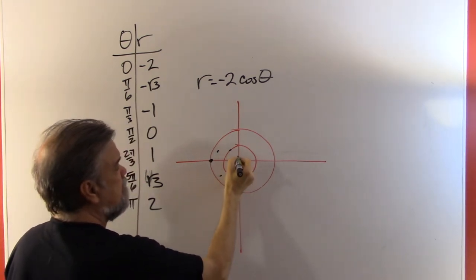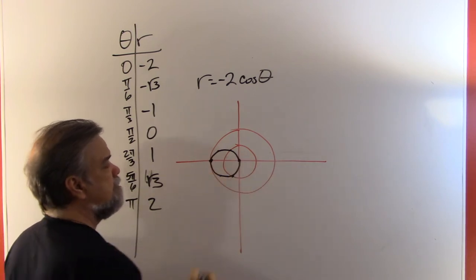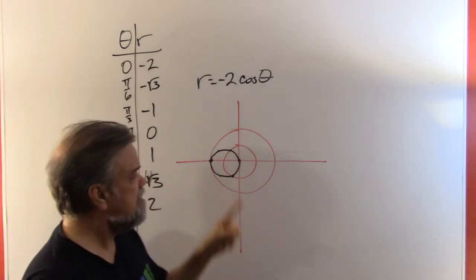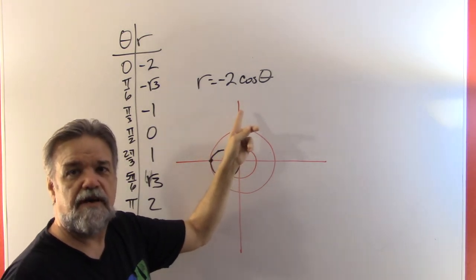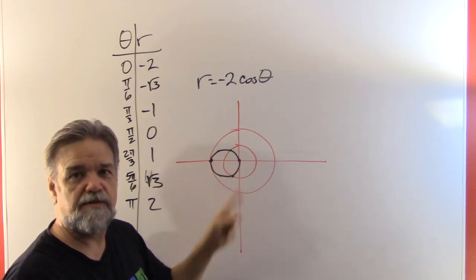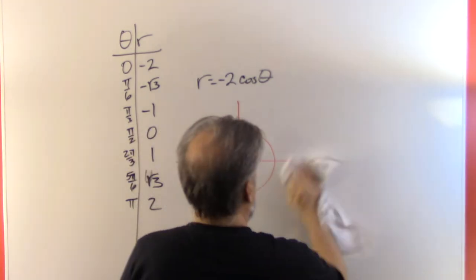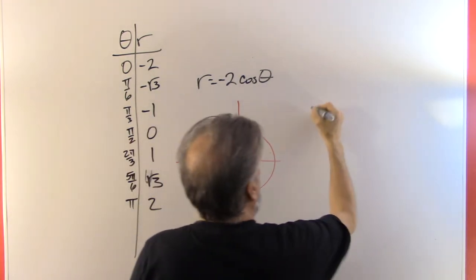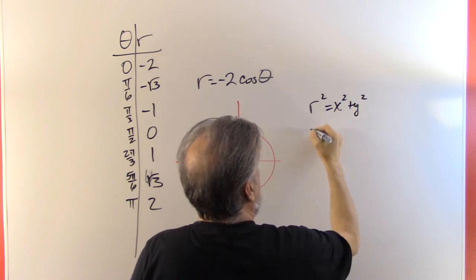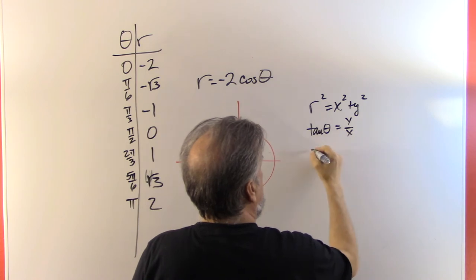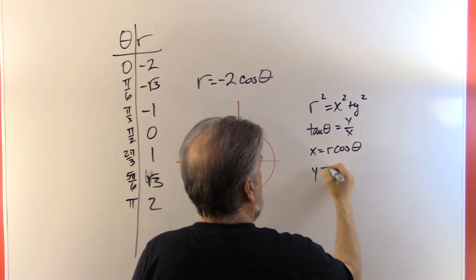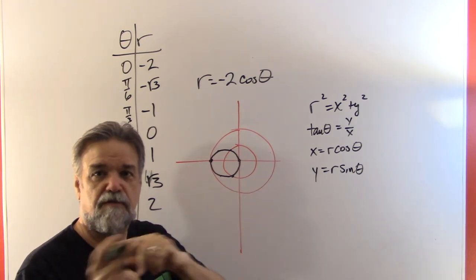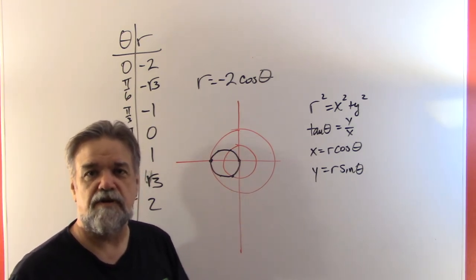So it's going to be something kind of like this — something vaguely circular. Now let me see if I can actually convert this to Cartesian coordinates, so I'll be able to see what this would be using x's and y's. Let's remember the four equations that are very helpful: r squared equals x squared plus y squared; the tangent of theta is y over x; x equals r cosine of theta; and y equals r sine of theta. Those are the four identities we use to go back and forth between r and theta, and x and y.